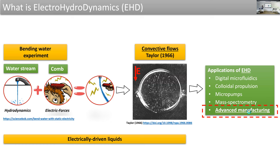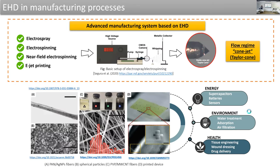These electrically driven liquids are employed in different applications. One of the most promising is an advanced manufacturing process to produce features at micro and nano scale. In these electrohydrodynamics-based manufacturing systems, there are different techniques to produce structures. They all have in common that they look for a stable flow regime called the Taylor cone — a cone structure at the end of the capillary. This cone is very important because it shows the balance between the driving forces and indicates stable production of structures.